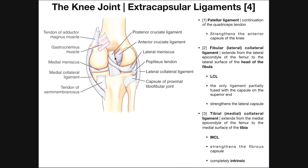A couple of other things here: up on the medial femoral condyle in the posterior aspect, we have what's called the adductor tubercle — a little ridge on the medial femoral condyle. The adductor magnus muscle actually inserts there via its tendon. Also, this is the origin of the medial head of the gastrocnemius.